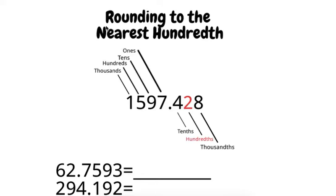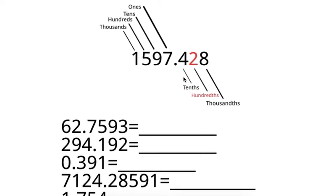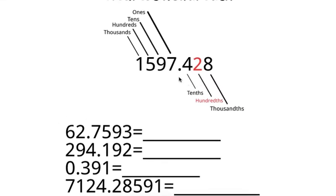Today we're going to be learning about rounding to the nearest hundredths place. The hundredths place is the place that is two digits away from the decimal point, two digits to the right. So for example, in this number, the hundredths place would be 2.